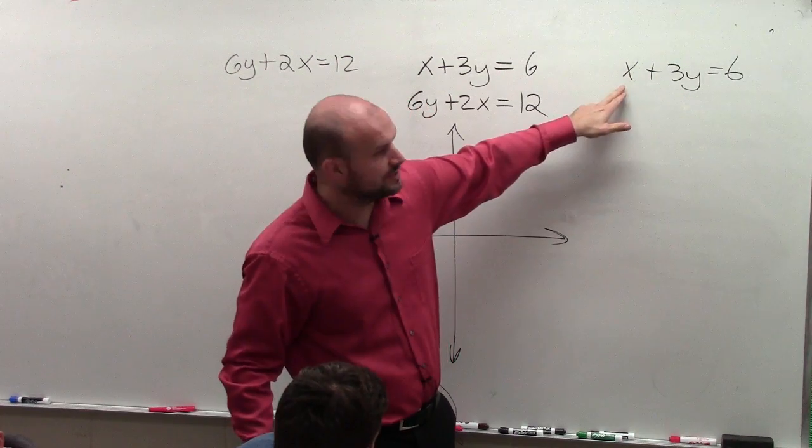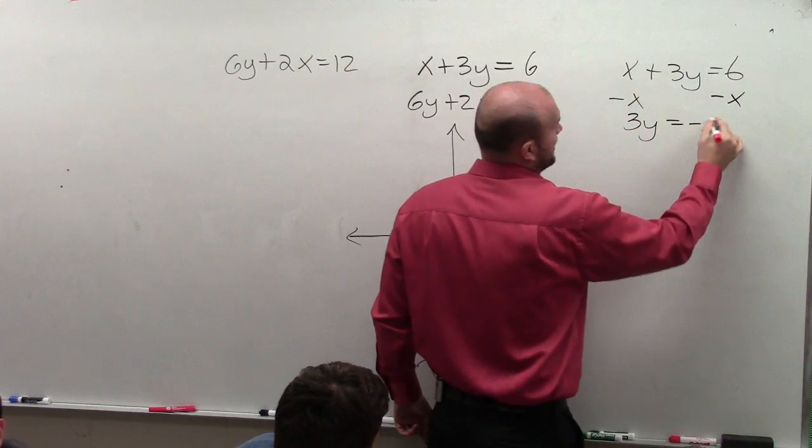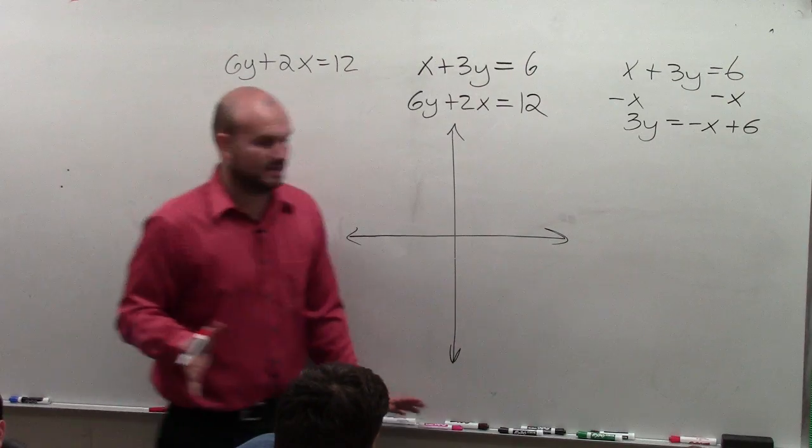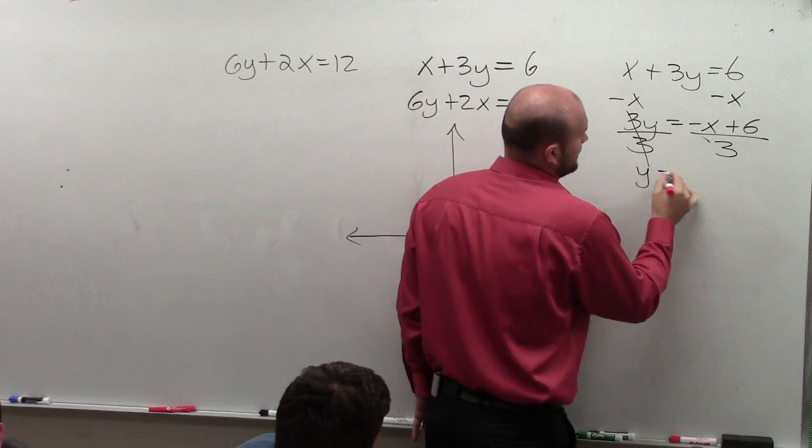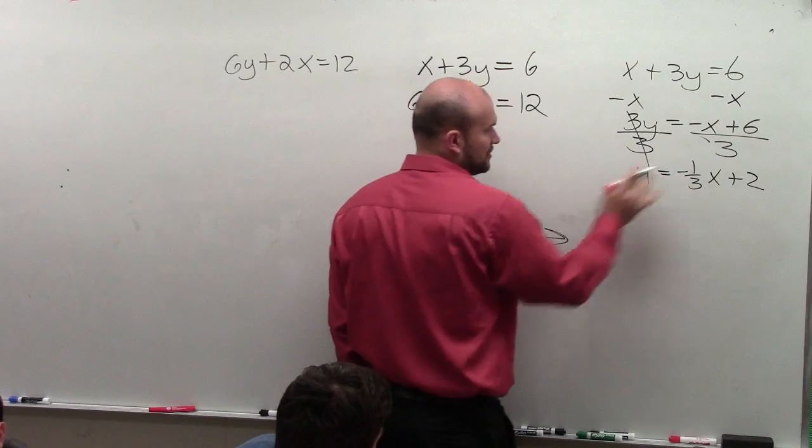So to solve for y, I need to get rid of my x on the left-hand side. So I'll subtract x. Then I have 3y is equal to negative x plus 6. Everybody follows me? I'm putting in slope-intercept form. Divide by 3. y equals negative 1 third x plus 2. Notice how I divided the 3 into both of those terms.